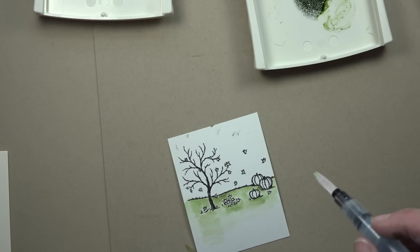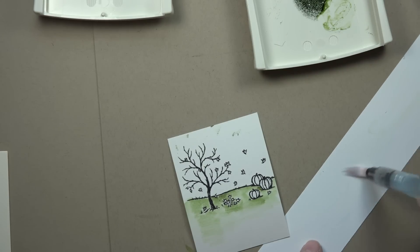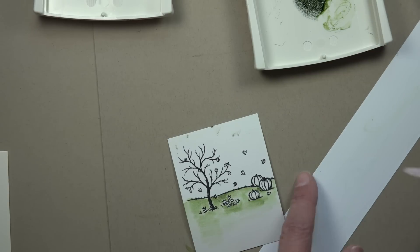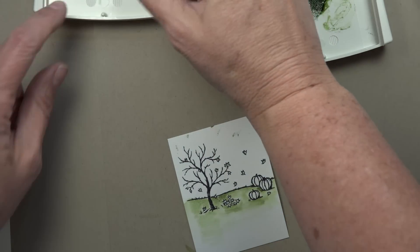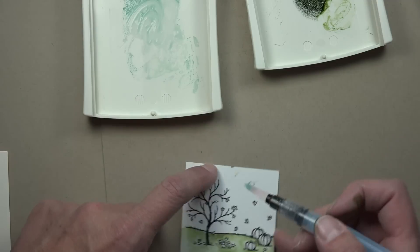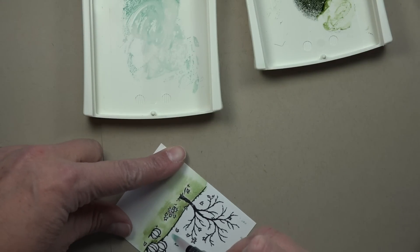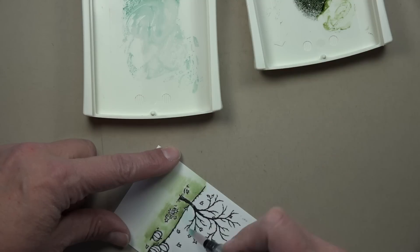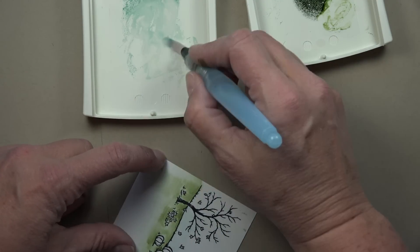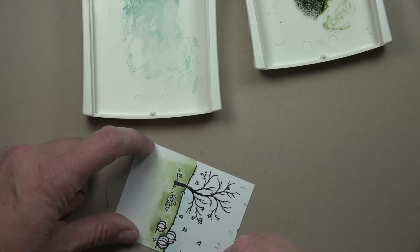Okay now to clean off the aqua painter you're just going to run it onto a piece of scratch paper until it runs clear and then once it's clear you can change out colors. Then I'm going to come in with some pool party and we're going to do the same thing only we're going to start at the bottom and work our way up. And remember we can go ahead and get that wet in that tree where it's stamped. It's not going to bleed out because of that archival quality of that ink.